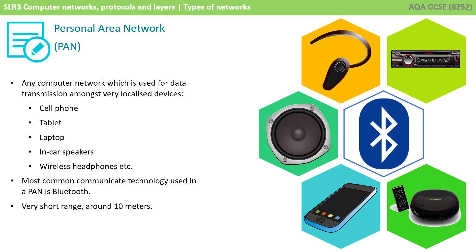The most common communication technology used in a PAN is Bluetooth. This has a very short range of around 10 metres, but is ideal for these sorts of devices as it draws a very low amount of power.